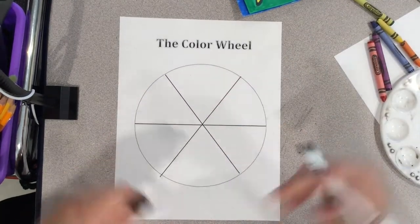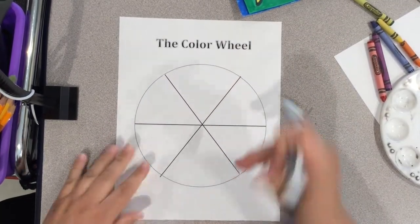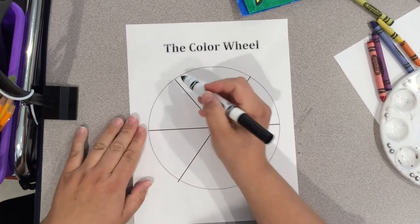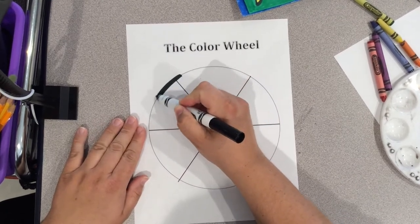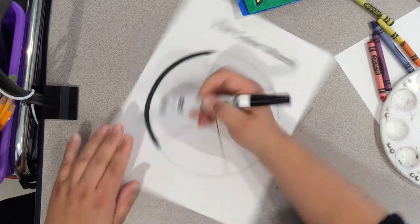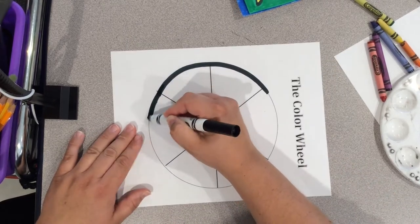The first thing we're going to do is, if you're using the printed copy, take the wide point of just a regular marker and we're going to trace it. This will give it a nice bold outline.